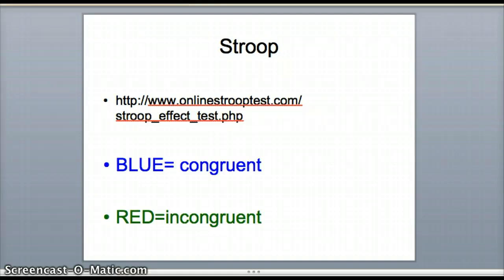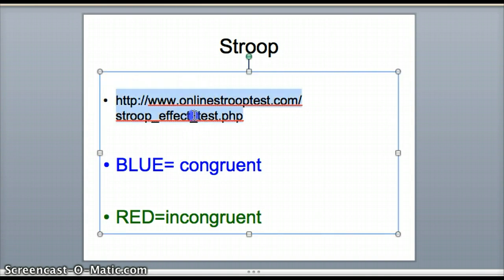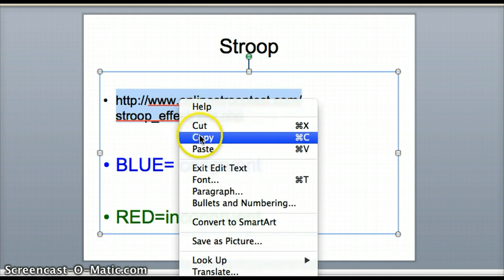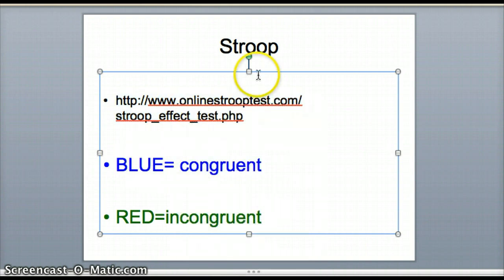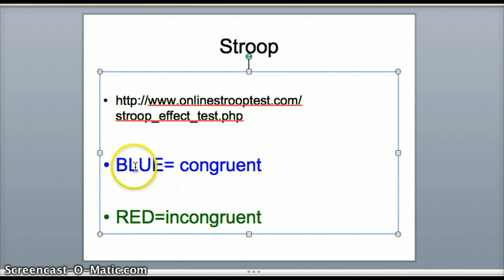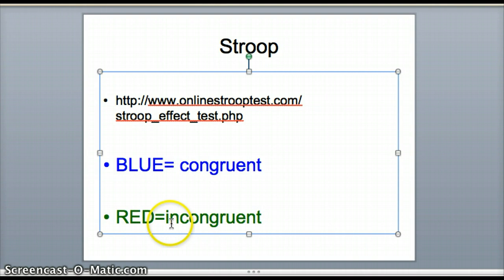Now we're going to try participating in an experiment — the Stroop test. The Stroop test has a congruent and an incongruent condition. It's going to ask you to press the correct color of what you're seeing, not what the word says. A congruent condition is the word 'blue' colored blue, and you press B for blue. An incongruent condition is the word 'red' actually colored green — you're supposed to press green, not what the word says. Let's go to the browser and try that out.